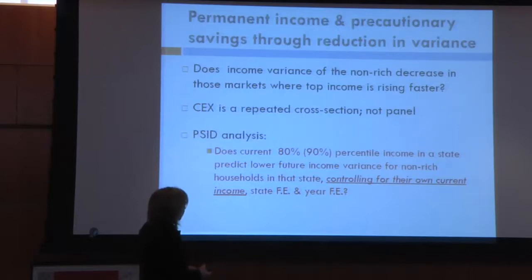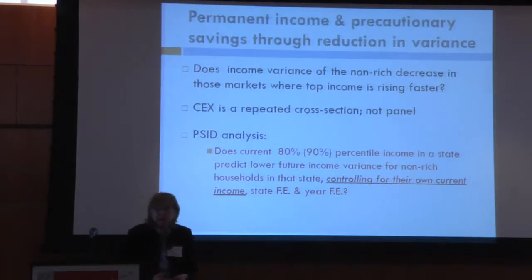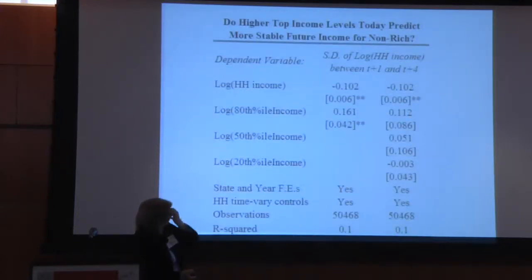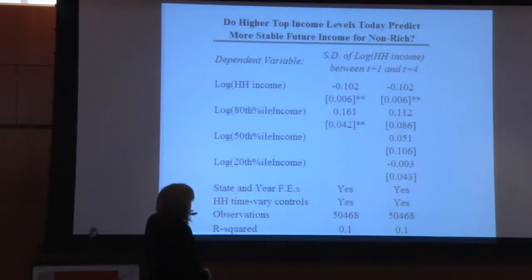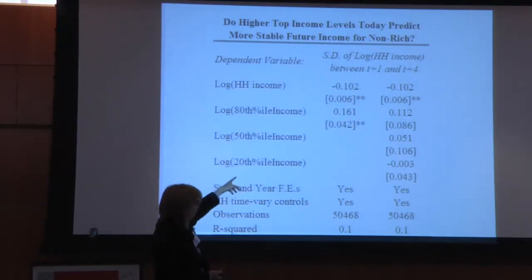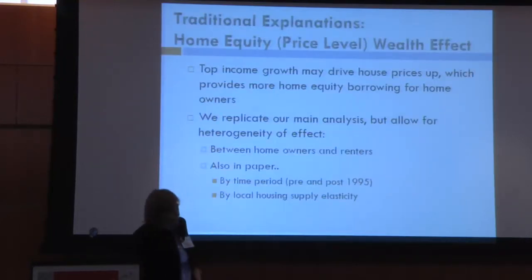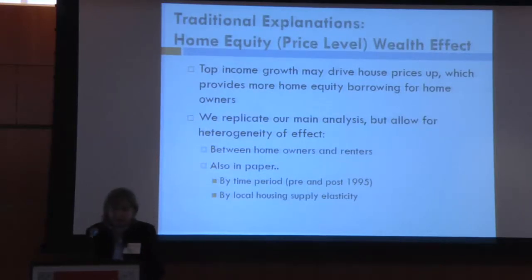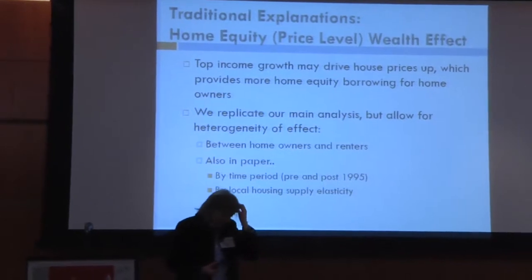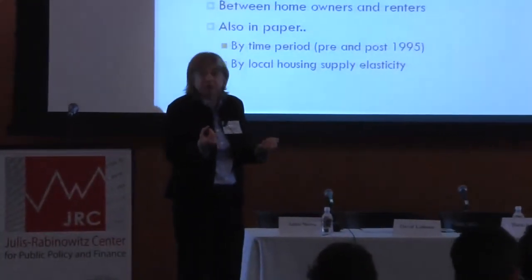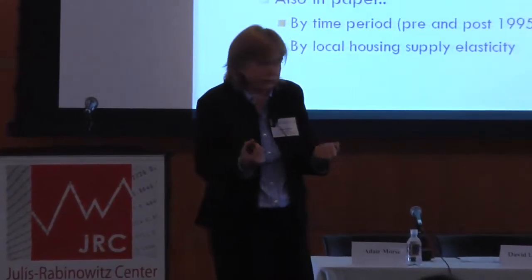Using a similar structure from the PSID, we look at precautionary savings — whether the variance of future income relates to rich income. We find no effect there, and actually find some effect that goes the wrong way with that story. So in our minds we've eliminated permanent income and precautionary savings effects as drivers of the consumption correlations we first documented.